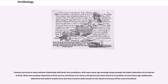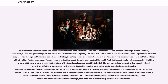Humans have had an observational relationship with birds since prehistory, with some Stone Age drawings being amongst the oldest indications of an interest in birds. Birds were perhaps important as food sources, and bones of as many as 80 species have been found in excavations of early Stone Age settlements. Waterbird and seabird remains have also been found in shell mounds on the island of Oronsay off the coast of Scotland.